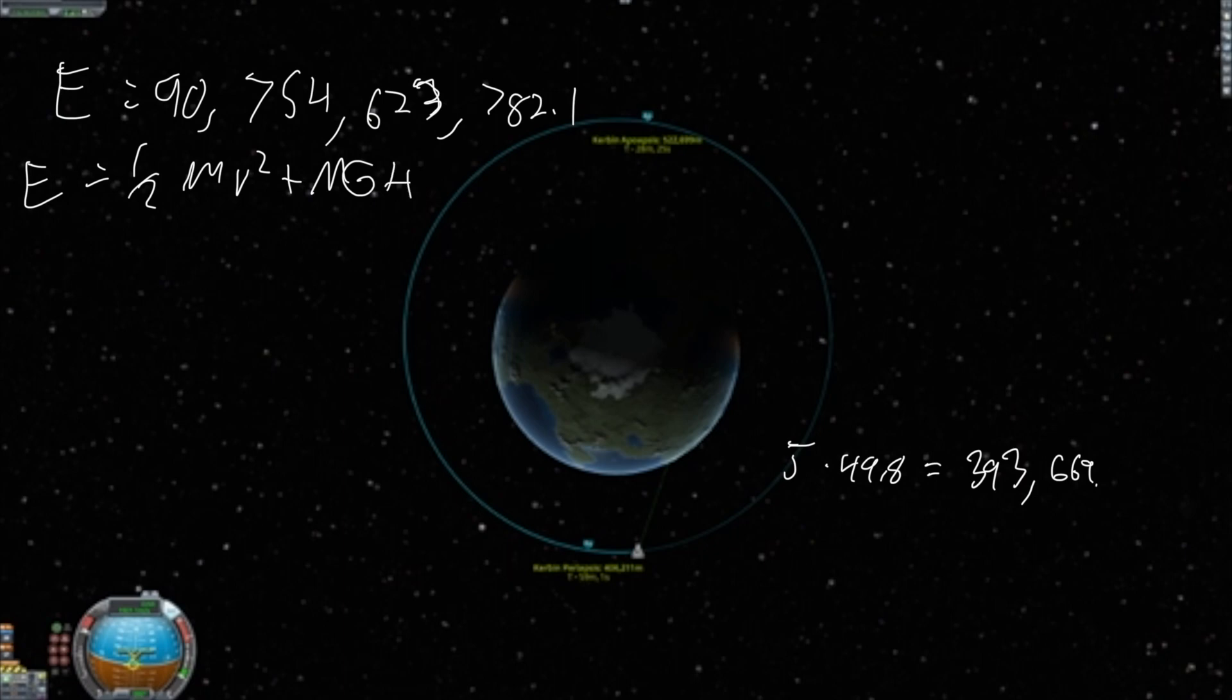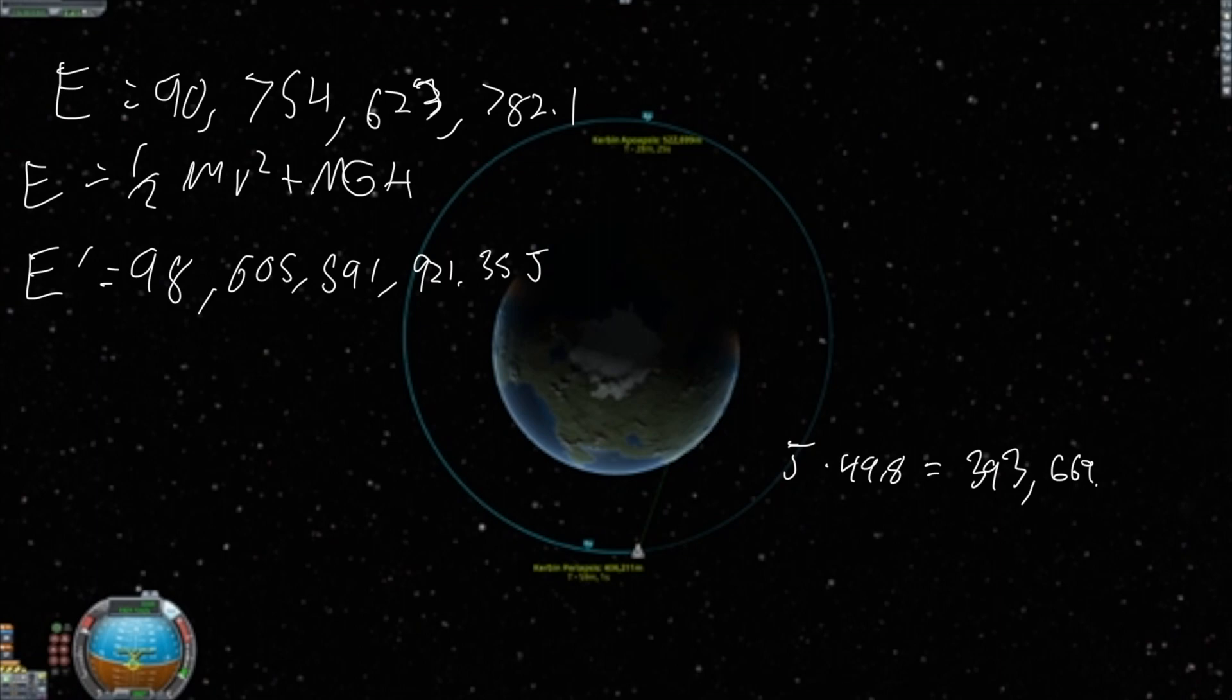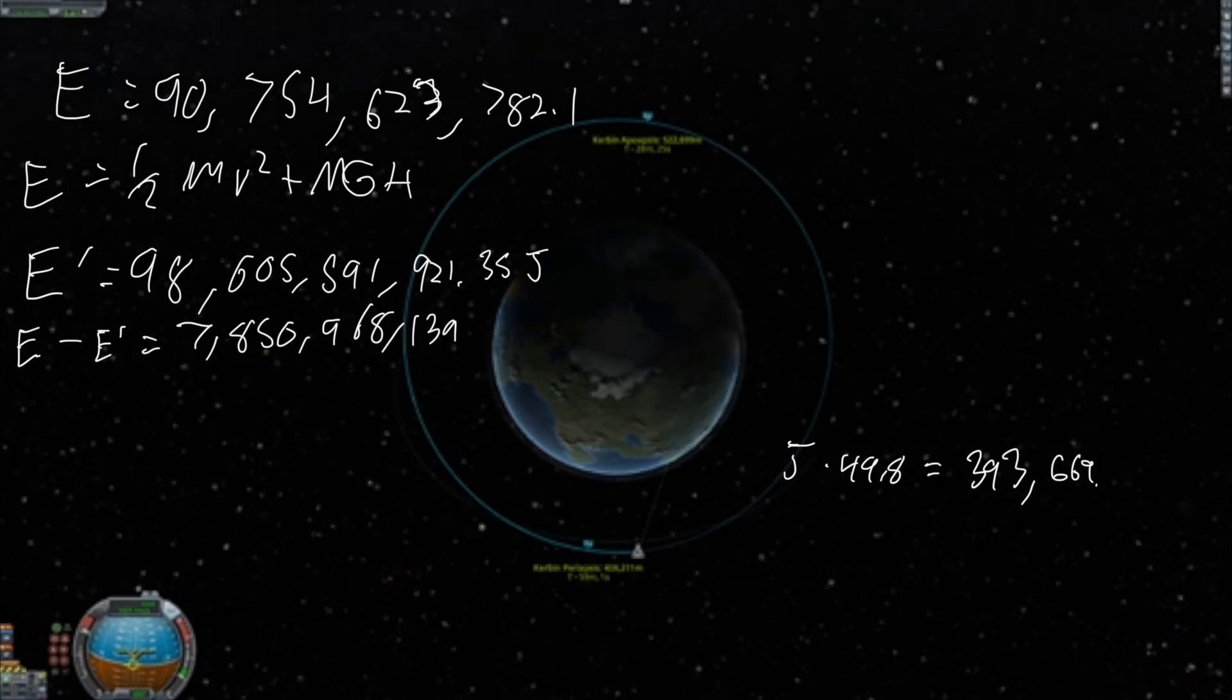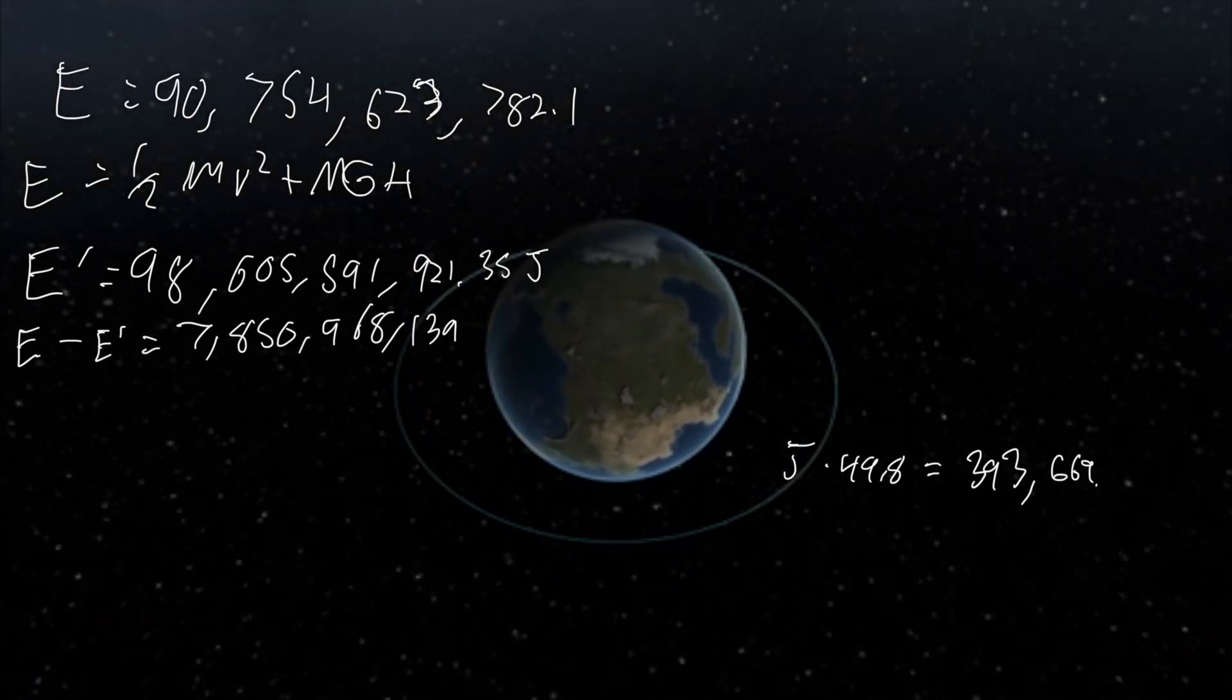We can see that it's now 98,605,591,921.35 joules. Taking the difference, we see that the orbit changes in energy by 7,850,968,139 joules. That does seem like a lot, but that's because of the simulation inaccuracies I mentioned earlier. But in real life it would be the same as the energy from the 50 delta v.